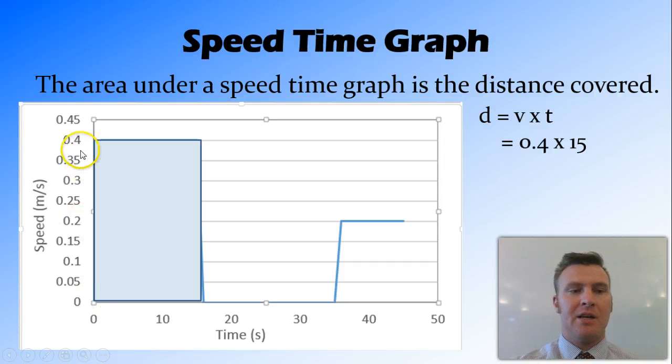So we look at the speed, which is 0.4, and the time, which is 15 seconds, we times these two together, and we get 6 metres. So this is the distance we covered, 6 metres.